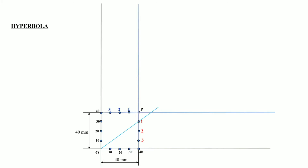Similarly we draw lines from 0 to 2 and 0 to 3, extending each until it crosses the extended horizontal line. In the same way, we will draw lines from 0 to 1, 0 to 2, and 0 to 3 on the horizontal line, extending each until they cross the vertical line beyond point P.